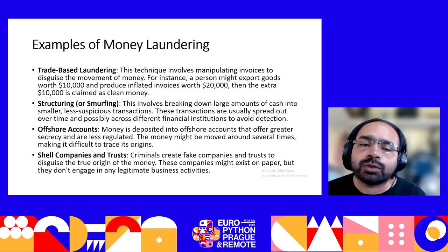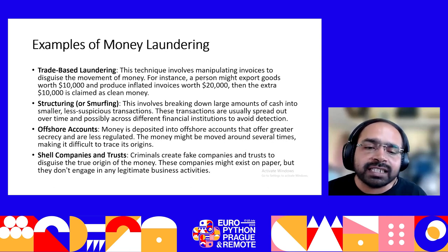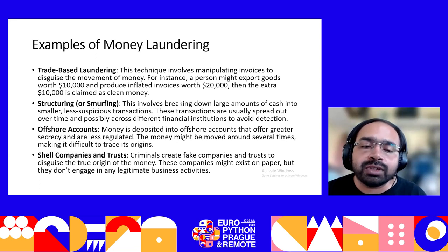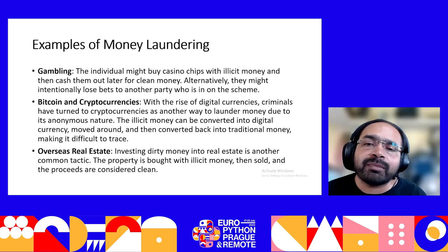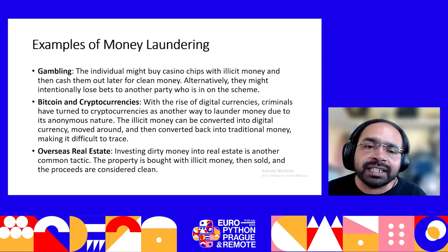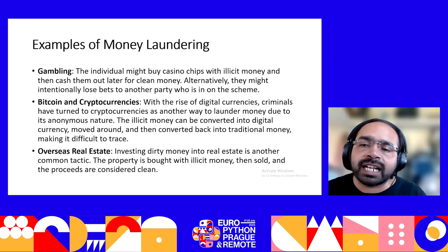Further examples include shell companies and trusts — criminals create fake companies that exist only on paper and don't engage in legitimate business activities. In gambling, an individual might buy casino chips with illicit money and cash them out later for clean money, or intentionally lose bets to a party who is in on the scheme. With the rise of digital currencies, criminals have turned to cryptocurrencies as another way to launder money due to their anonymous nature.